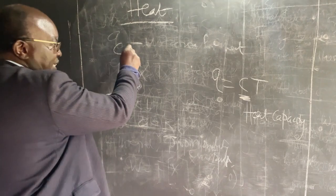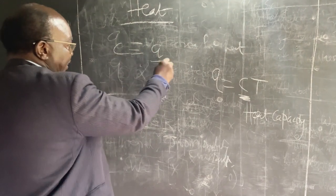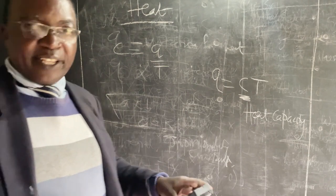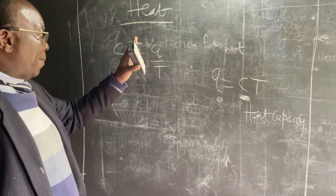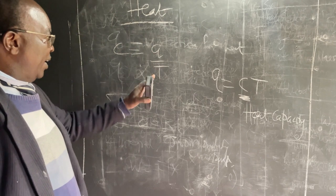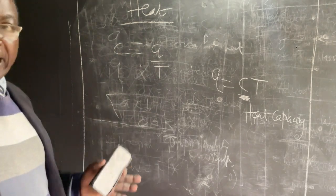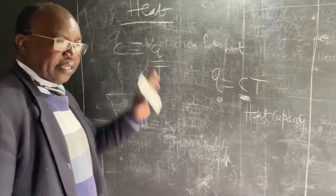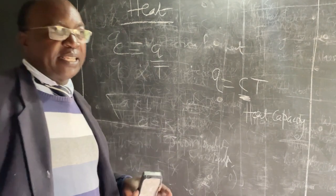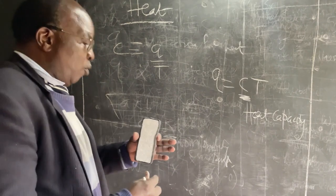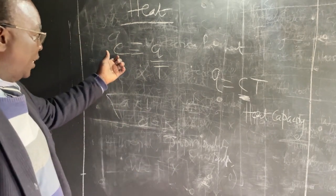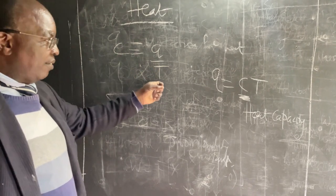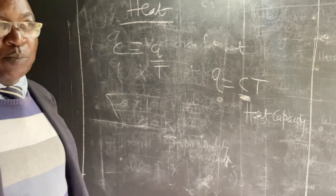If we rearrange the expression, we get C equals Q over T. So it means that if the heat capacity C is large, then for the amount of heat you supply to the system, the change in temperature is not very large. But if the heat capacity is small, then when you apply heat to that particular system, the change in temperature is very large. Basically, small heat capacity means you are dividing by a large T, and large heat capacity means you are dividing by a small T.